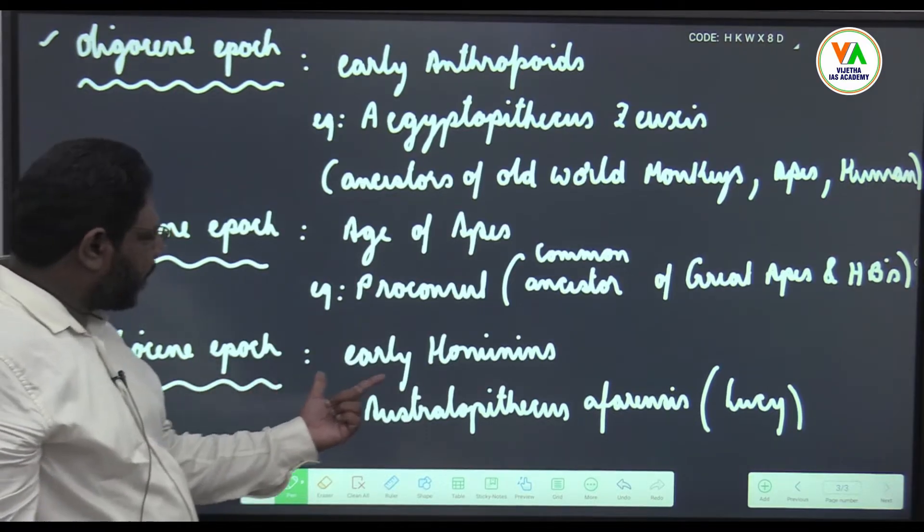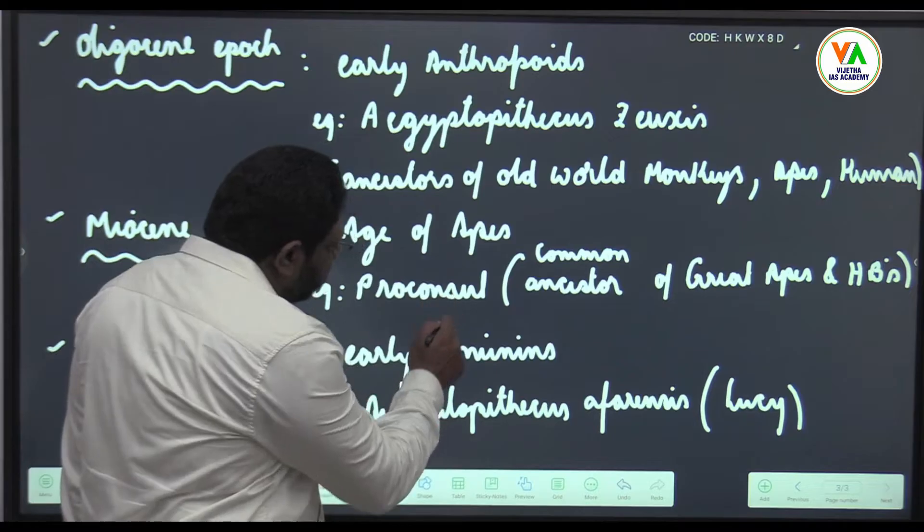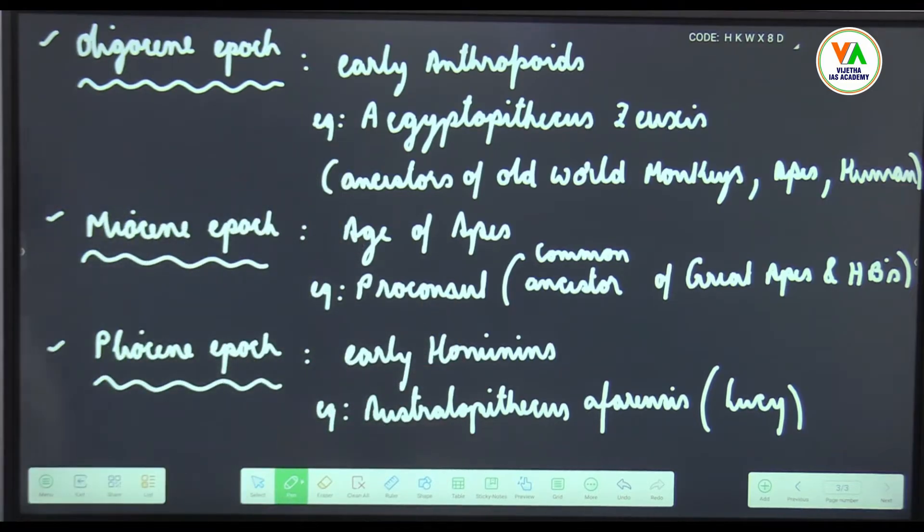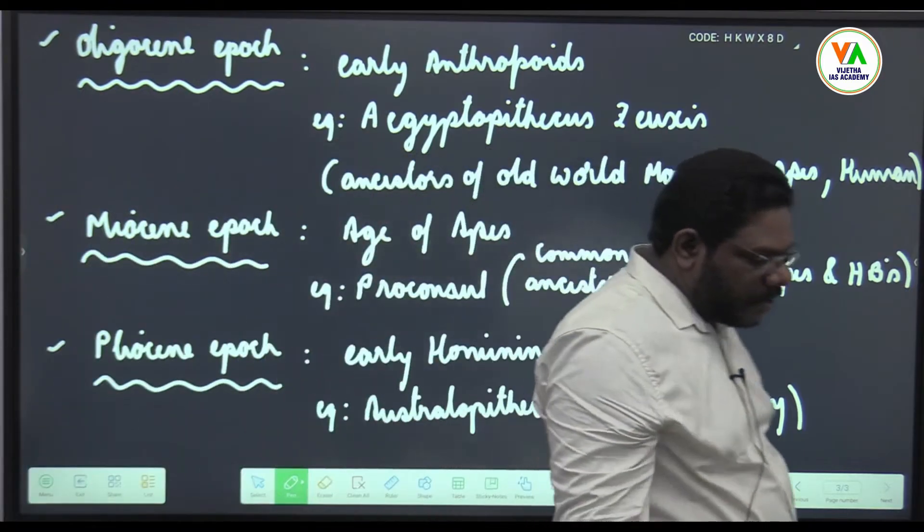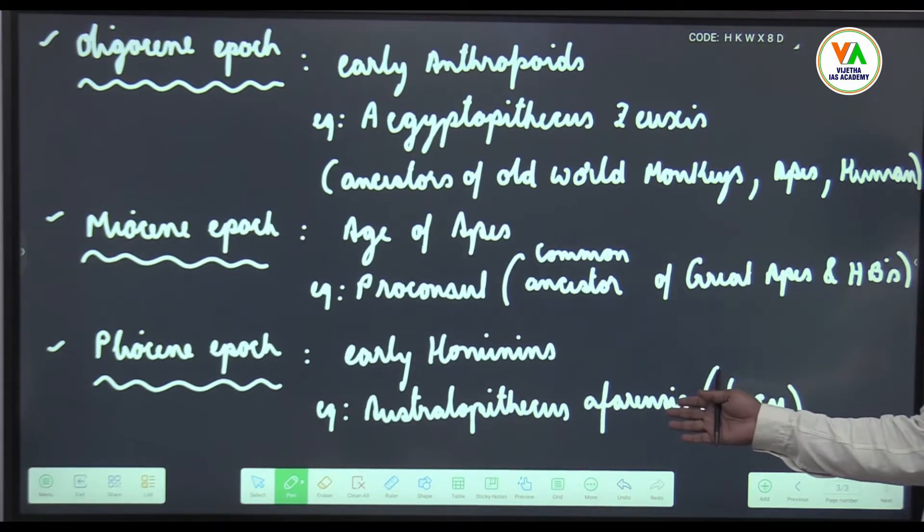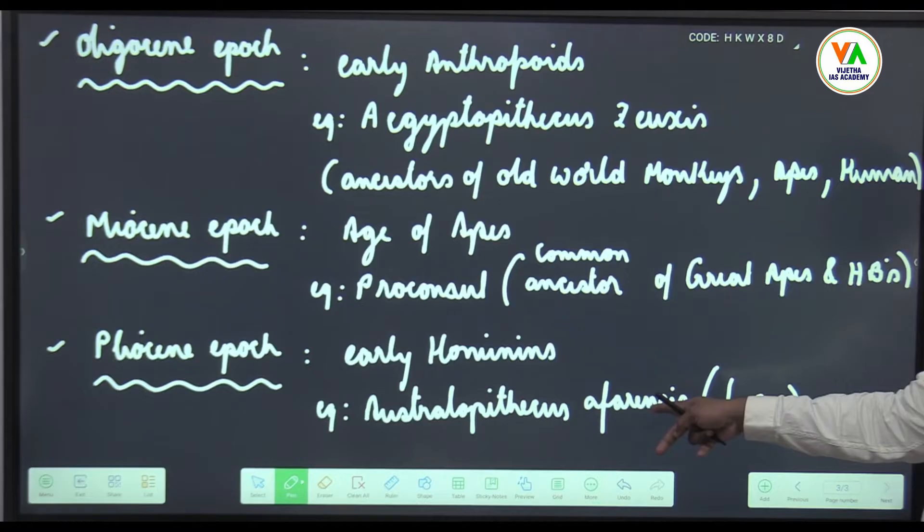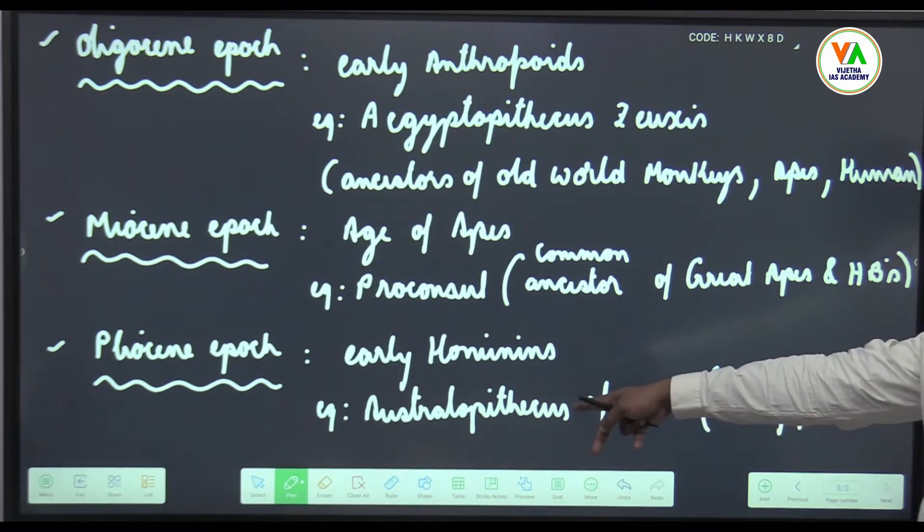After Pliocene you have Pleistocene in which all the Homo, Australopithecus different varieties and then even Homo also came into existence. In Pleistocene not only afarensis there are many species. Likewise in every category, the ones which we have in our syllabus, all genus Australopithecus was given: afarensis, africanus, aethiopicus, boisei, robustus, ramidus.